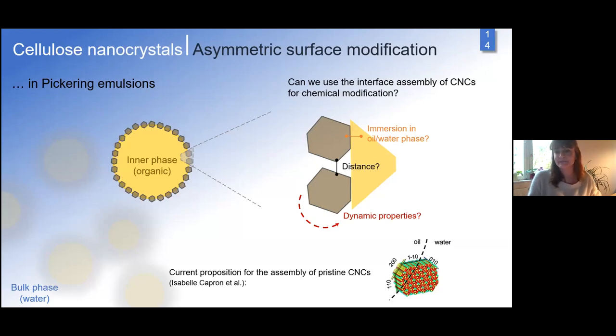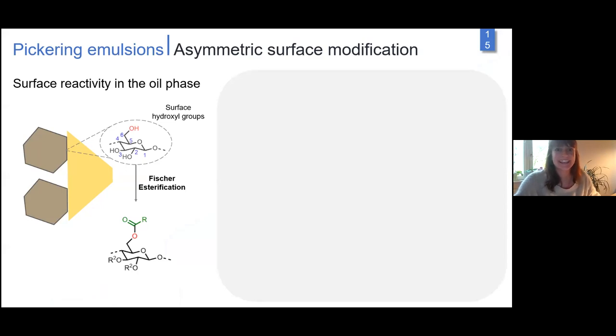Do we have dynamic properties? Are crystals irreversibly absorbed to the interface or do they turn? The current proposition of this interface assembly is by Isabelle Capron's group, pioneers in Pickering emulsion systems with cellulose nanocrystals. Based on molecular dynamics simulations, pristine unmodified cellulose nanocrystals are hydrophilic or amphiphilic. All OH groups are immersed in water phase, and CNCs absorb to the interface only by their CH planes, the 200 plane.